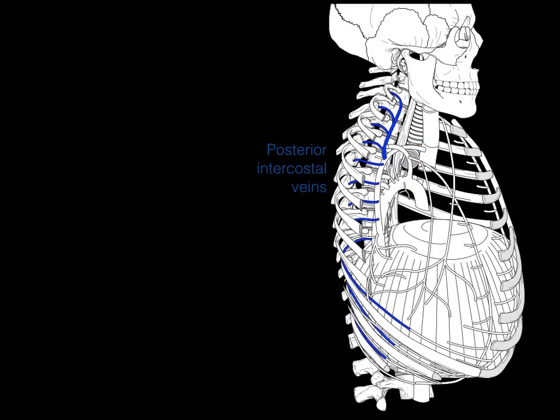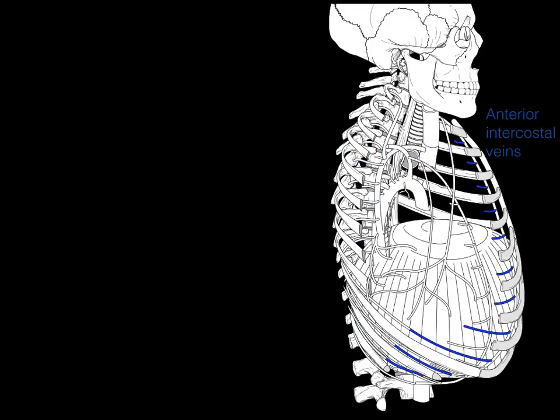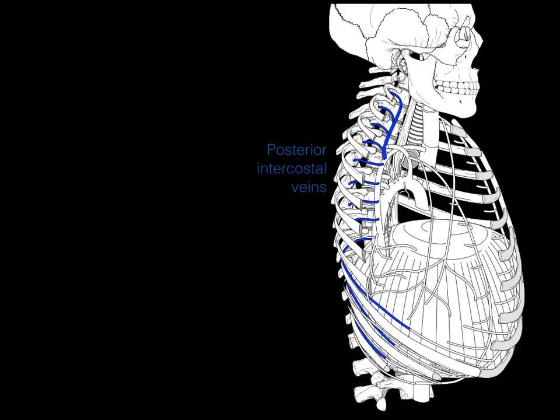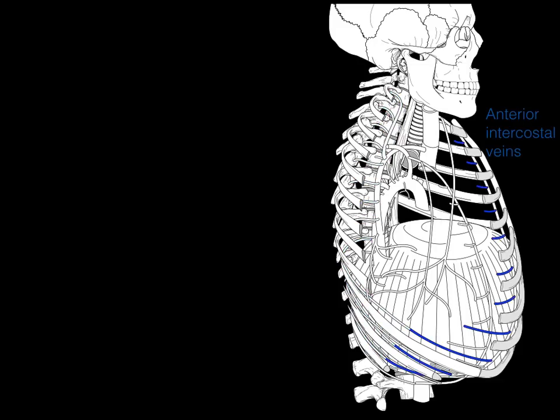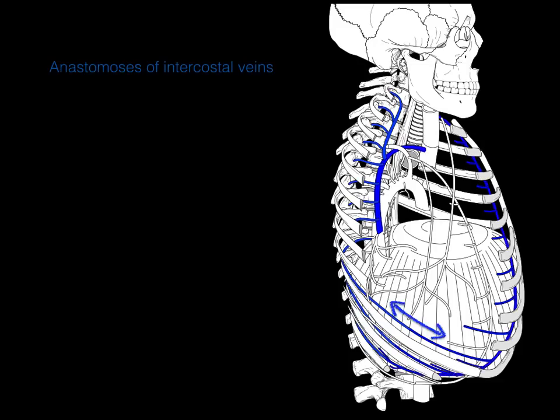There are posterior intercostal veins and anterior intercostal veins. Posterior and anterior — they come together and form an anastomosis laterally in the intercostal spaces. That word anastomosis means a union, a coming together, a joining.